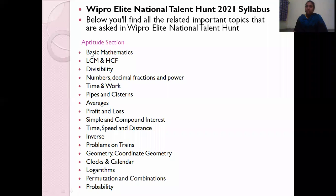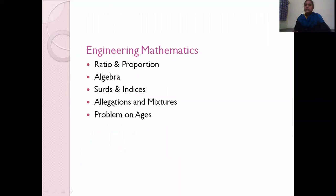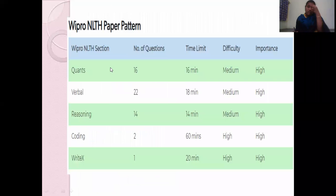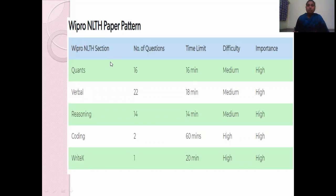The engineering mathematics portion includes ratios and proportions, algebra, surds and indices, allegations and mixtures, and problems on ages. This is the full quantitative syllabus combination. If you score 70% of the marks in this section, you can proceed to the next level.